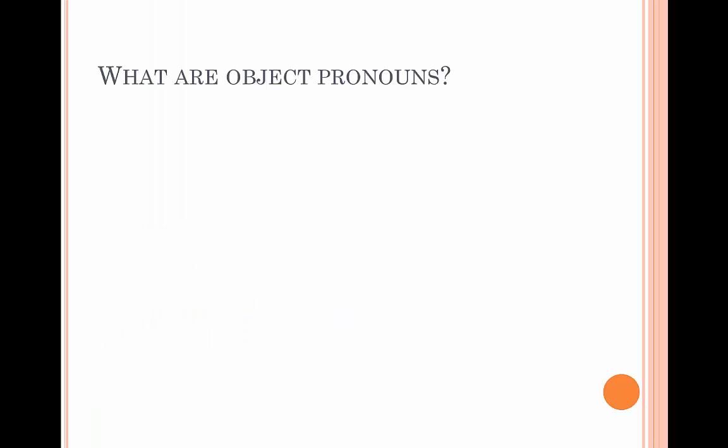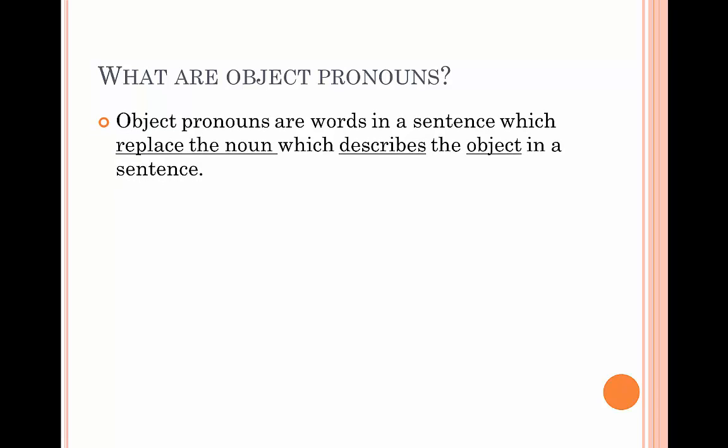What are object pronouns? Object pronouns are the words in a sentence which replace the noun that describes the object in a sentence. For example, 'I saw him.' The subject in the sentence is 'I,' because I saw the person. 'Him' replaces the person who I saw. Therefore, him is the object which the action is being acted upon.